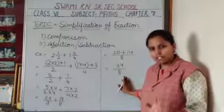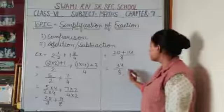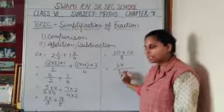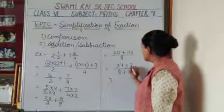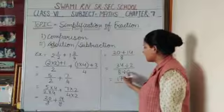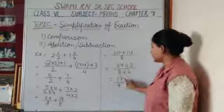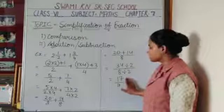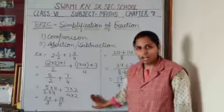If simplification is required, simplify 34 upon 8 by dividing both by 2: 34 ÷ 2 = 17 and 8 ÷ 2 = 4. Now 17 upon 4 — since 17 and 4 are not in a common table, this is the last simplified answer. This is the method of addition.